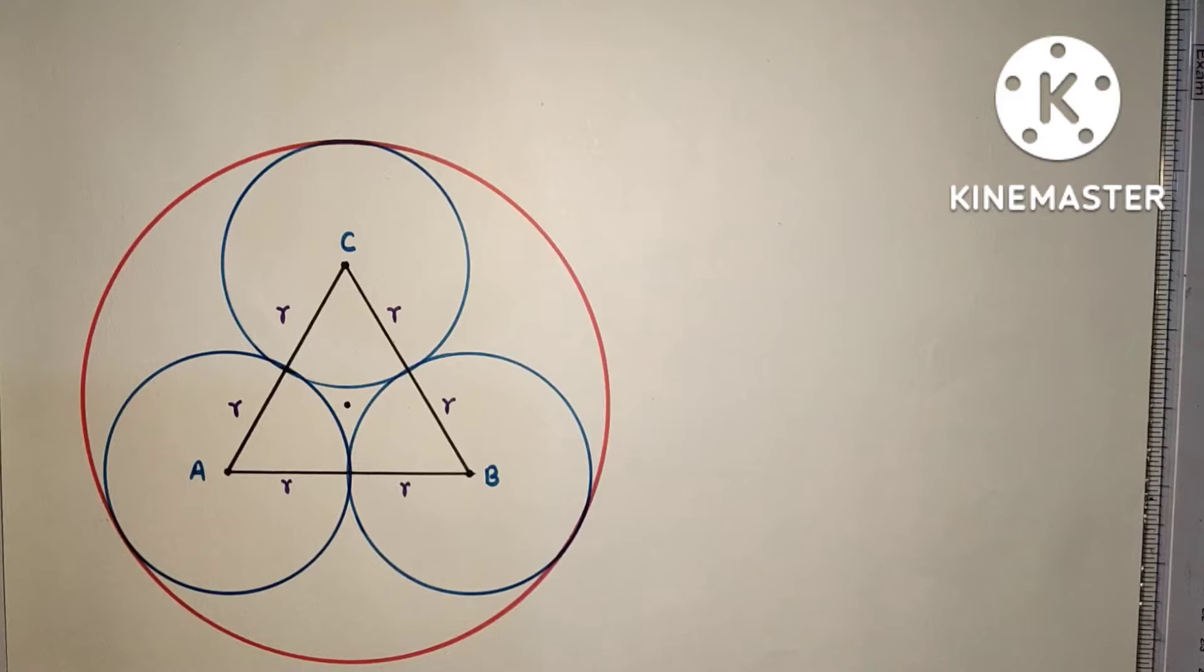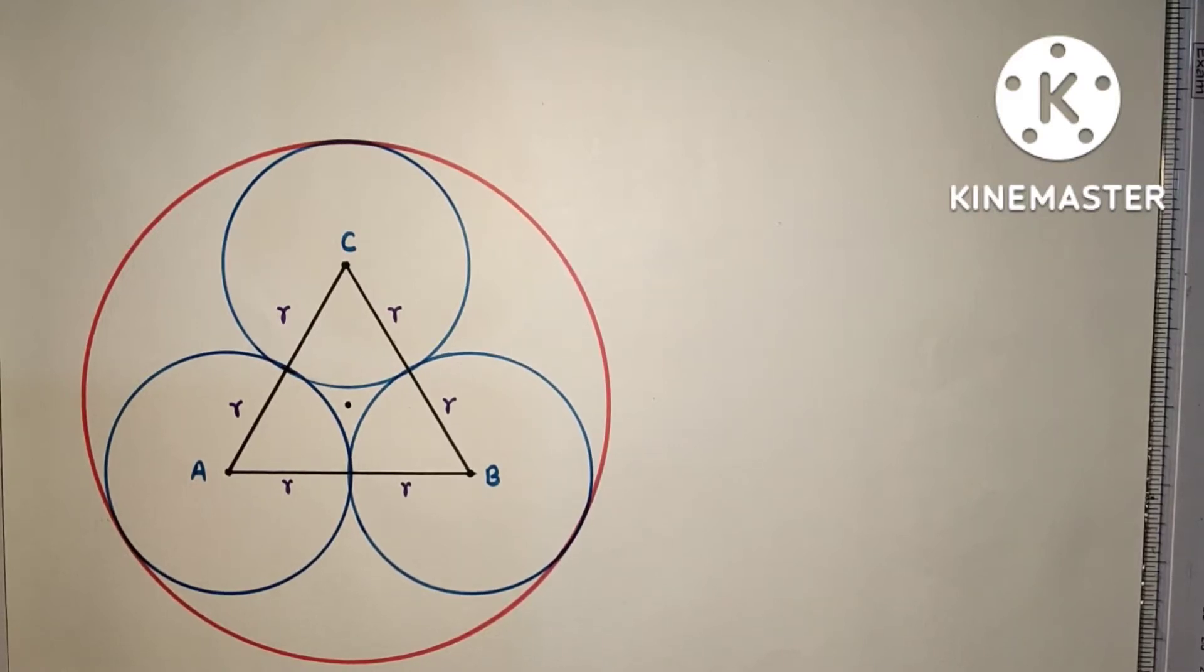Hi everyone, for this diagram the question is: equal circles each of radius R touch one another. The radius of the circle touching all three given circles internally is—now there are four multiple choice questions, we have to select the correct one. I found two solutions.